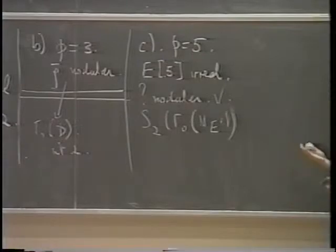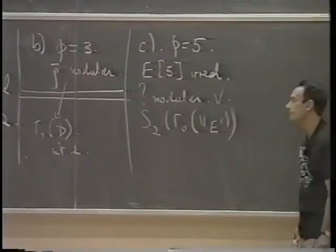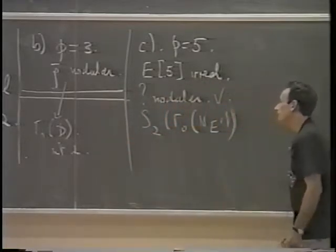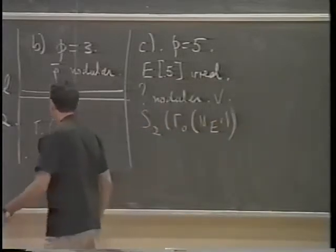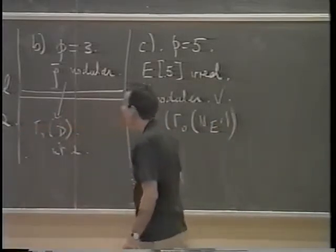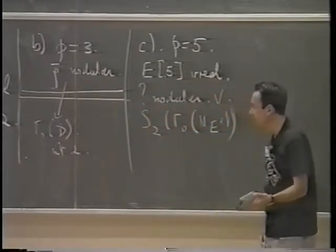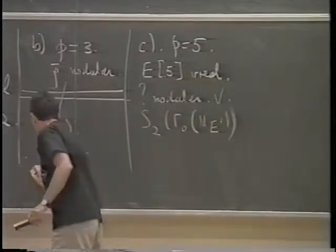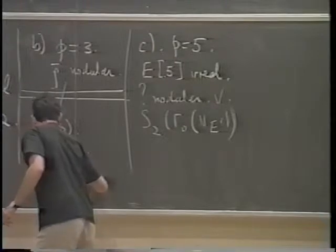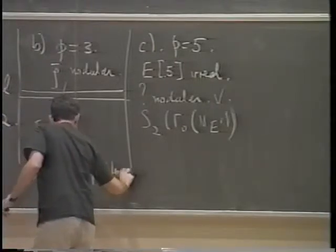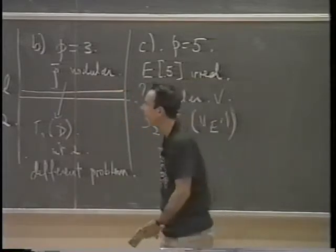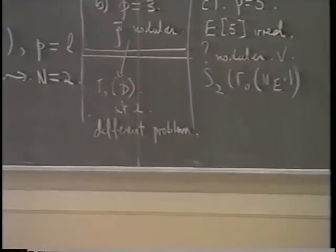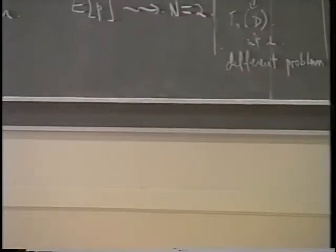Situations A and C are completely analogous — they're special cases of the principle Dick Gross was talking about. Whereas in situation B you have a rather different problem, which was encountered and conquered in papers of Carayol and Edixhoven and also Gross himself. This is a somewhat different problem which I may or may not get into very much in these lectures.